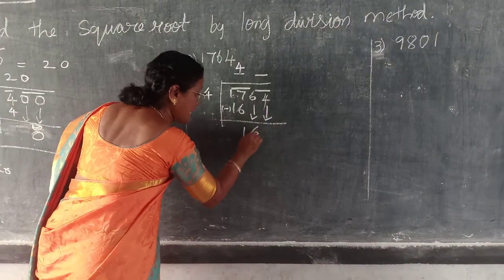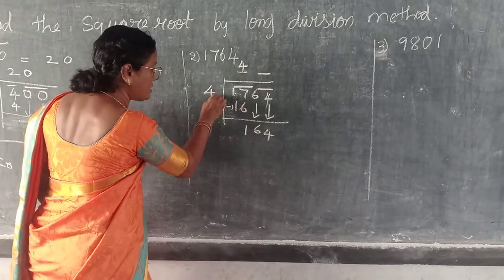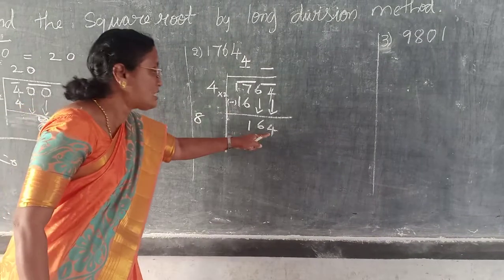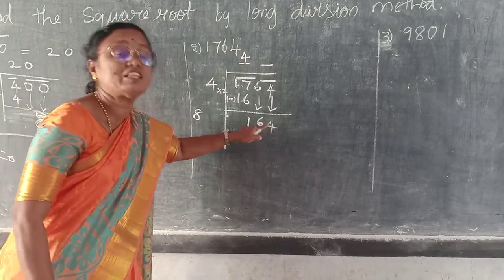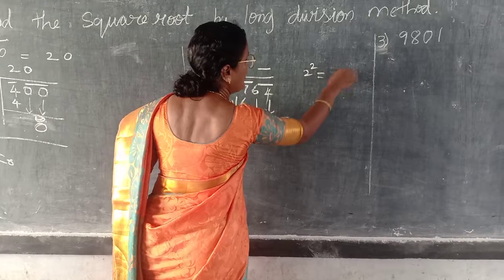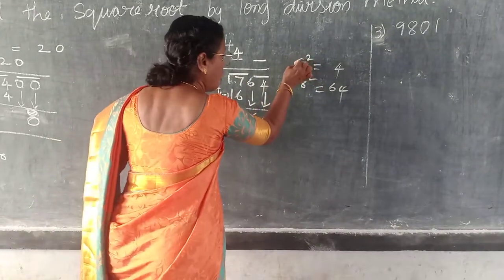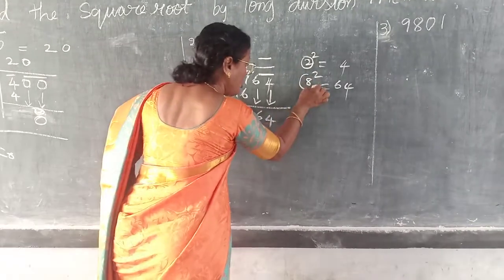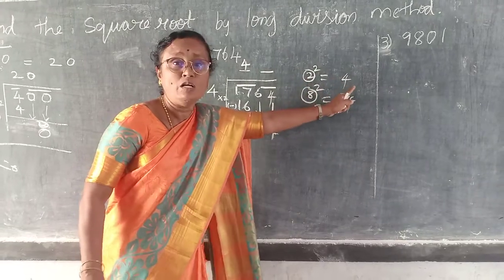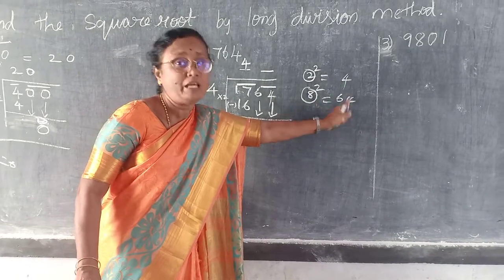Next, bring down 64 — 2 digits. This should be multiplied by 2: 4 times 2 is 8. Now look at the number — it is ending with 4. For what number will it end with 4? 2 square is 4, 8 square is 64. So either you have to take 2 or you have to take 8. The unit digit of the square will be 4 in both cases.